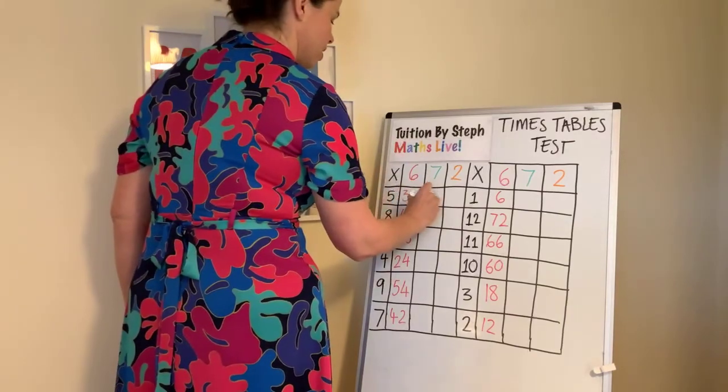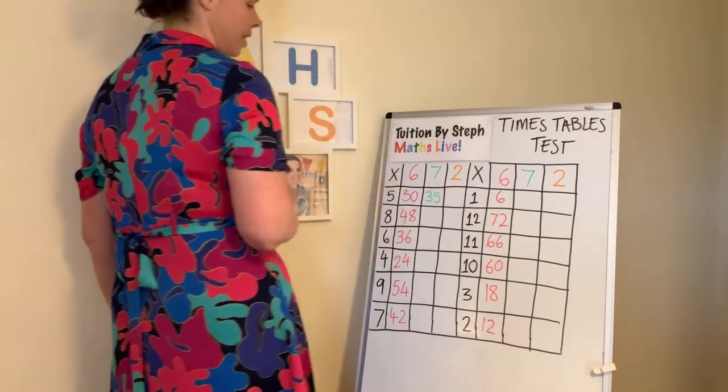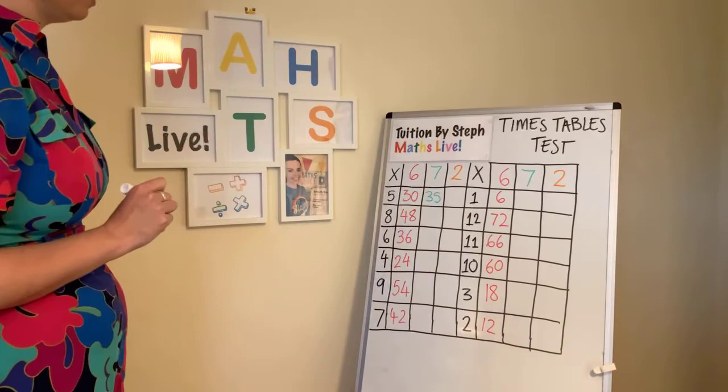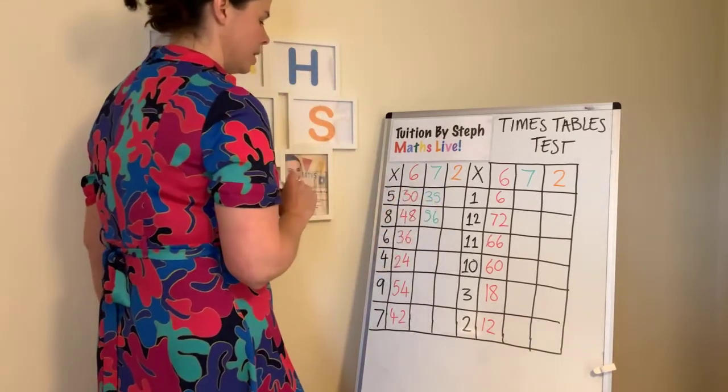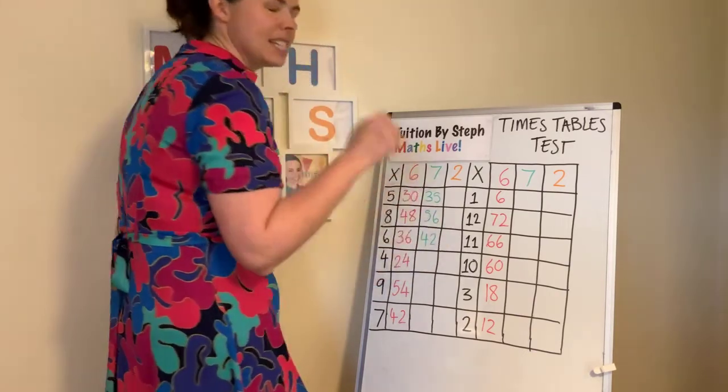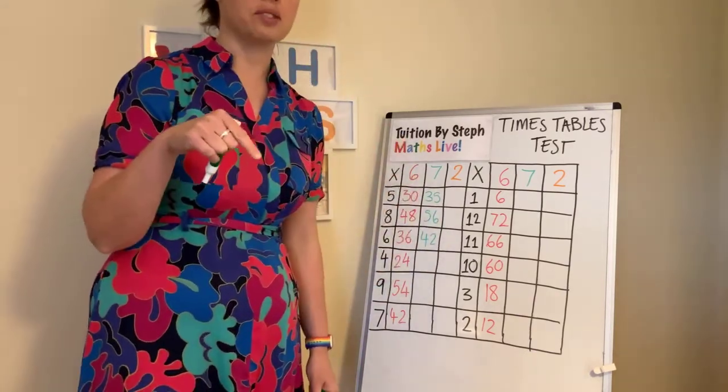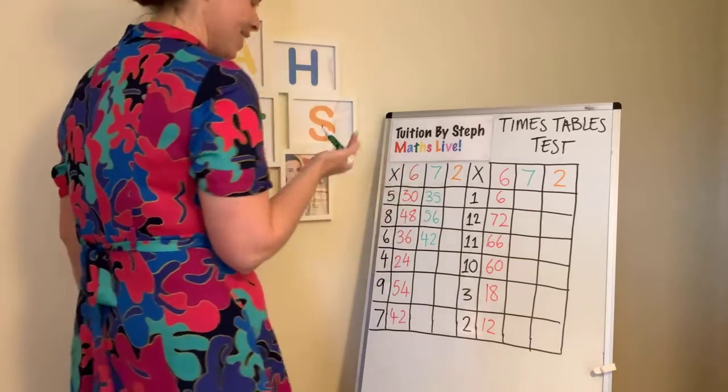Right. Seven fives, 35. Eight sevens, 56. Seven sixes, 42. See, I did then. I said seven sixes, rather than six sevens. Don't know why I just did.